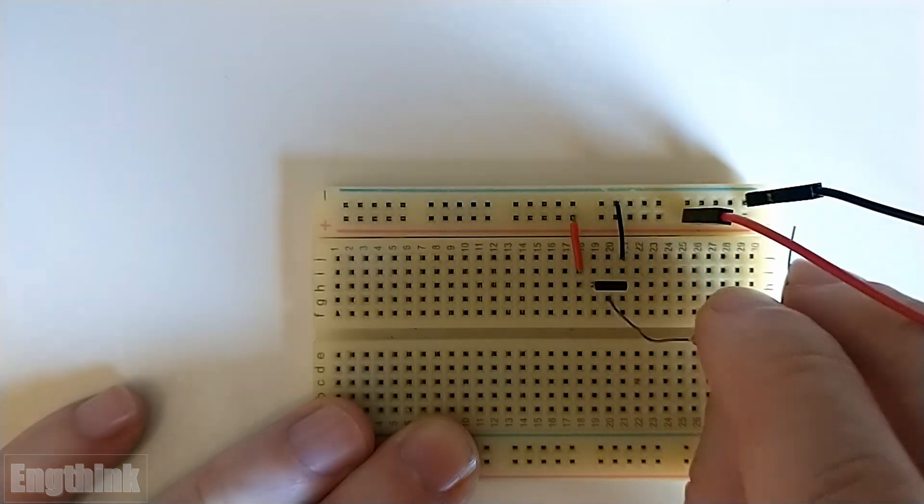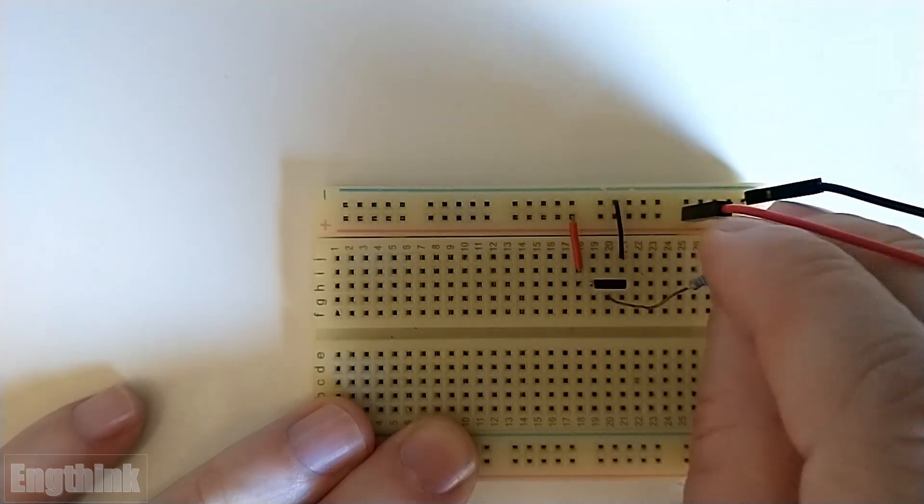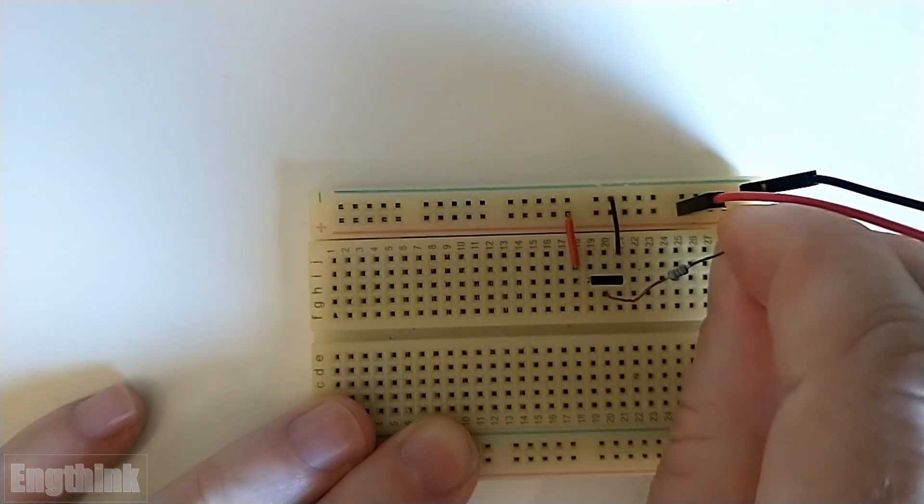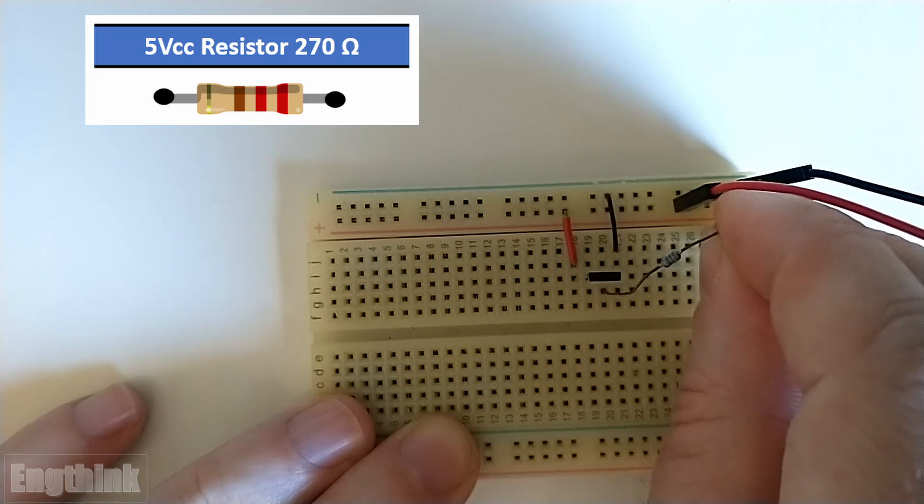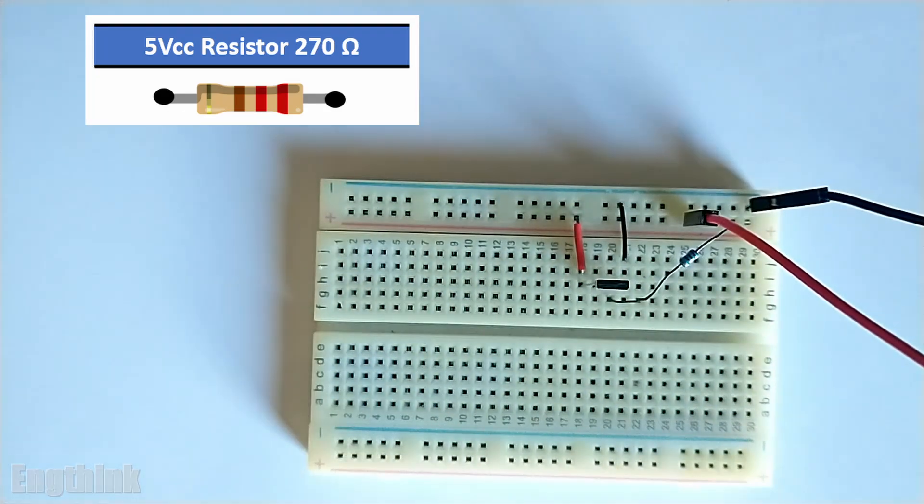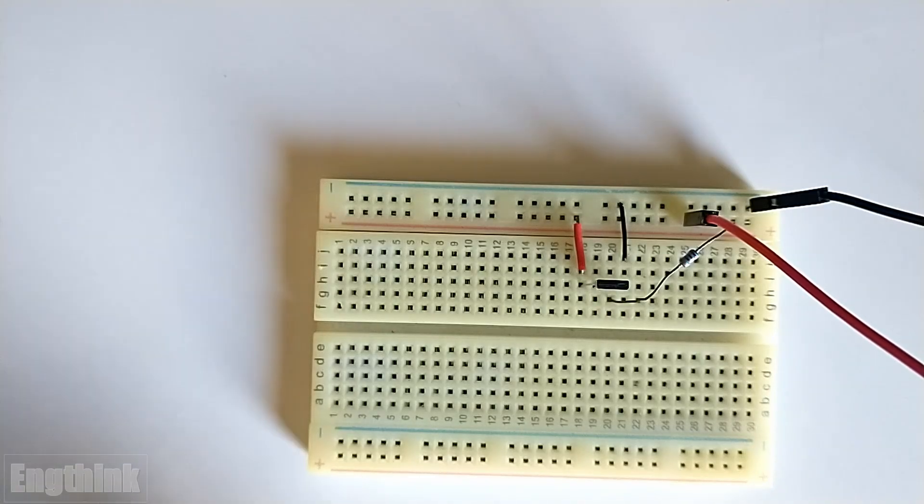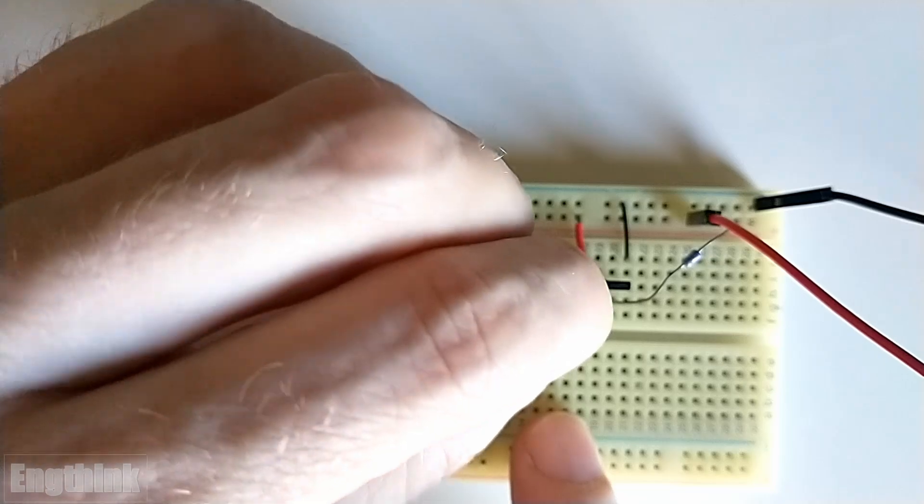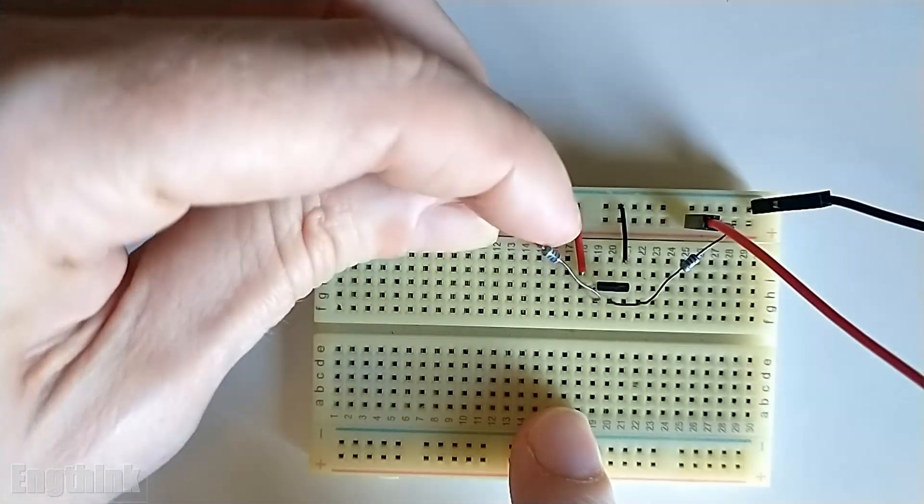As we are using 5 volts DC, it's possible to use a lower resistor, for example 270 ohms. This resistor shall be connected in the positive and it works as a pull up resistor to polarize the transistor that is in the open collector mode.